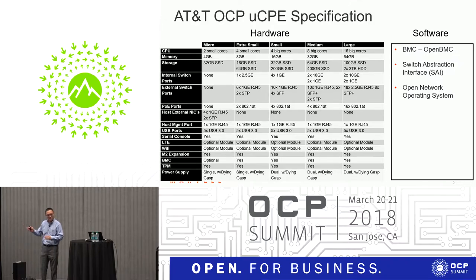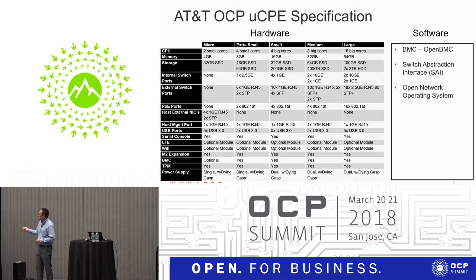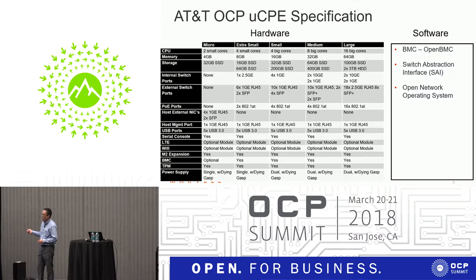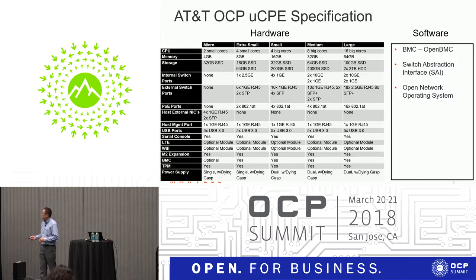From the spec, there are micro, extra-small, small, medium, and large categories, addressing different performance ranges with different SSD requirements, I/O requirements, and configurations — rack mount, standalone, etc. On the software side, a key requirement is using OpenBMC, and when you interact with a switch you need a sideband connection. They also need to run something like Open Network Linux as a base minimum to function as a Universal CPE.